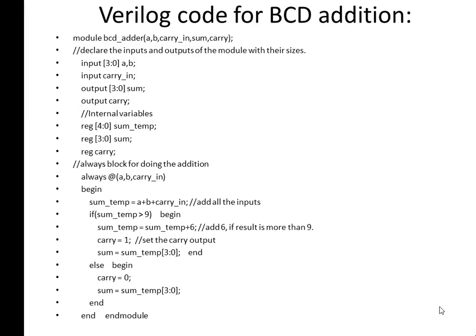In this video we will see the Verilog code for BCD adder including test bench. So what is BCD adder? Whenever we are adding two binary numbers A plus B, and if it exceeds 9, you have to add 6. That is, if the result is more than 9, you have to add 6. Else, you have to remain as it is.